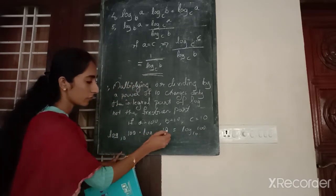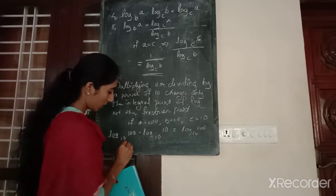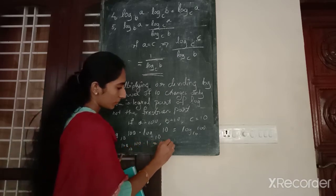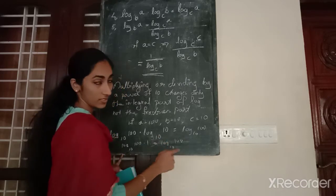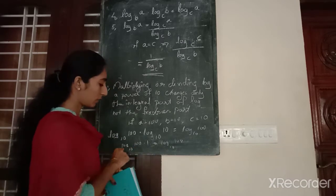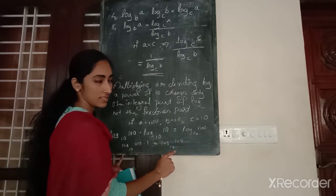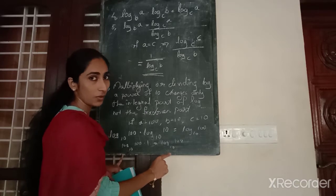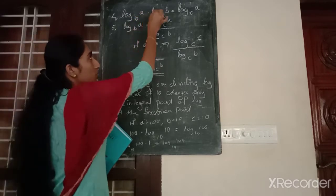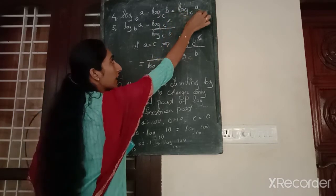Now we write log C value 10. Logarithm of A base B into 1 is equal to logarithm of A base B. So logarithm of A base B into logarithm of B base C equals logarithm of A base C.